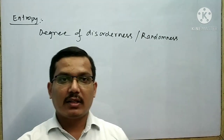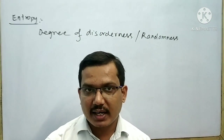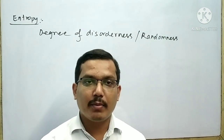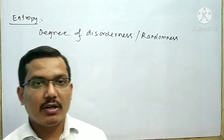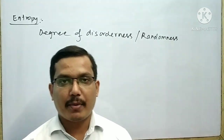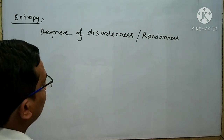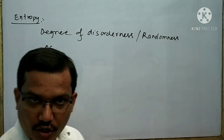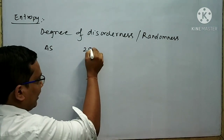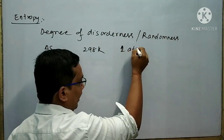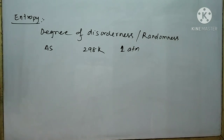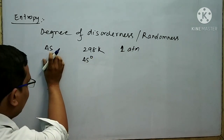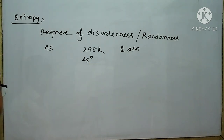For a chemical reaction, the entropy must be high; otherwise the reaction cannot proceed. High entropy means the molecules in the system move randomly and are more active, allowing them to react with each other to form products. The change of entropy is denoted by ΔS. The change of entropy at 298 K and 1 atm pressure is called standard entropy change, denoted by ΔS°.